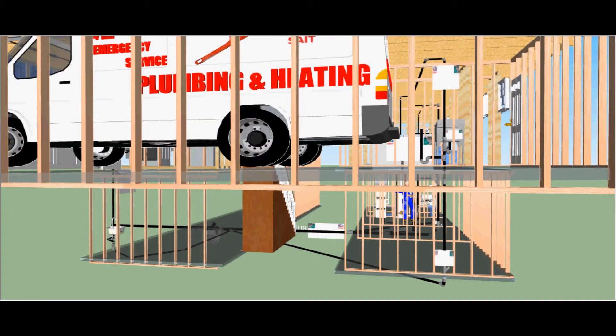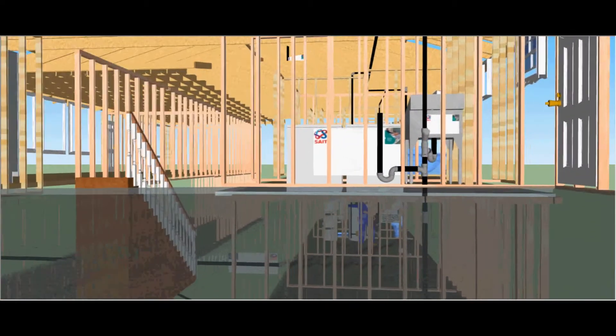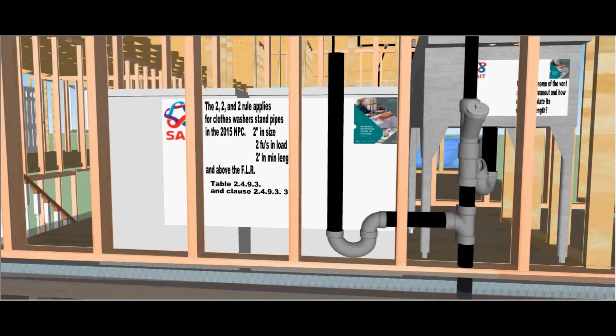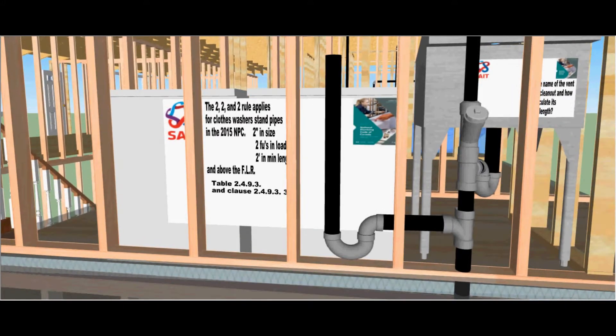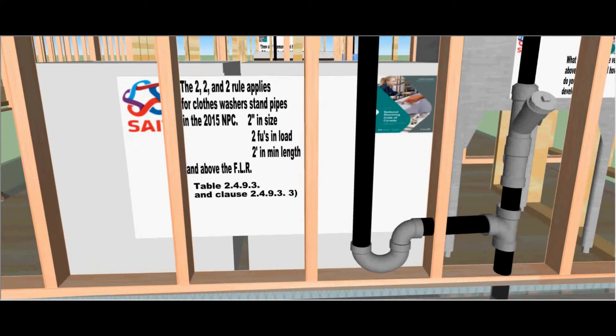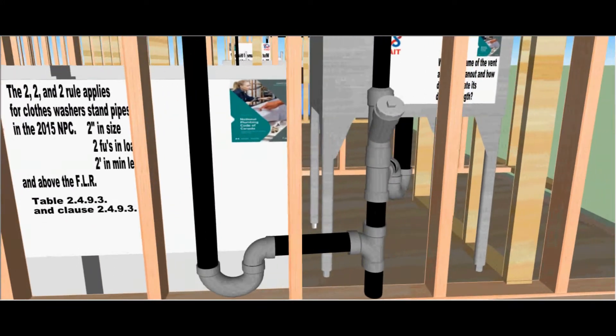Now let's take a look at our laundry setup or clothes washer machine. The 2-2-2 rule applies for clothes washer standpipes in the 15 code: two inches in size, two fixture units of load, two foot minimum length and above the flood level rim. This is found in table 2493 and clause 2493 subsection 3.